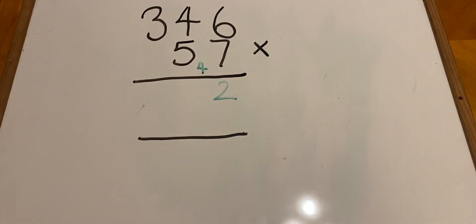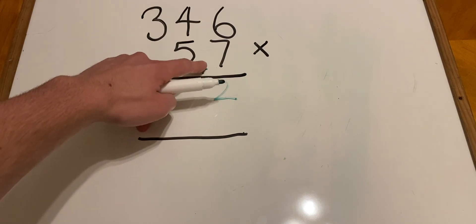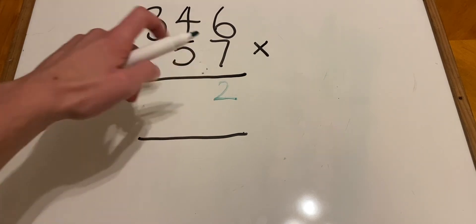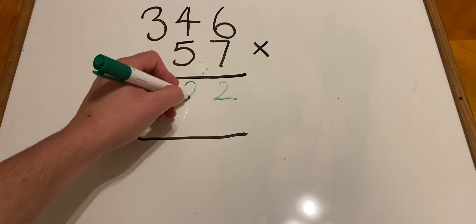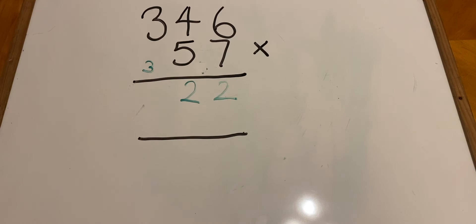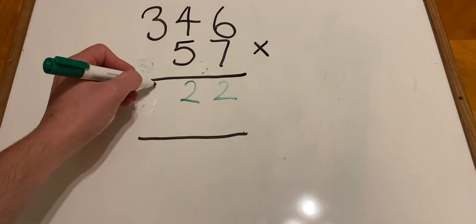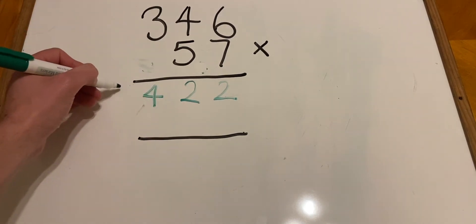7 times 4 is 28, but we need to add this 4 here. And 28 add 4 more makes 32. So that's a 2 here and a 3 carried over. Now 7 times 3 is 21—7, 14, 21. Add the 3 here makes 24. So 4 and then 2.